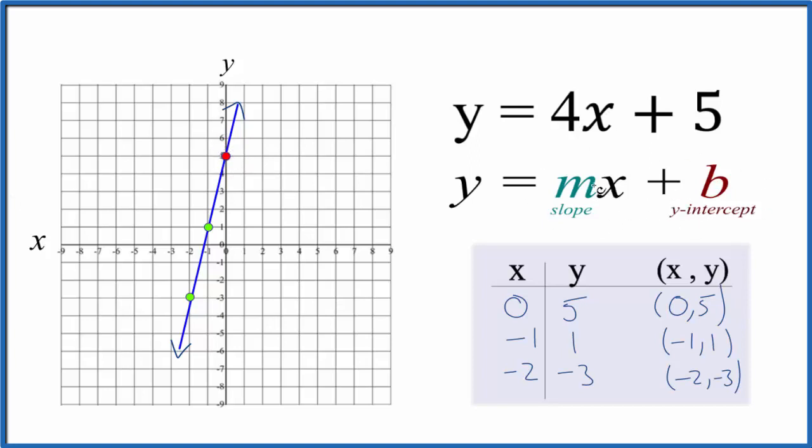And then we look at m. Why don't we consider this 4 over 1? So we have rise over run. 4 over 1 is the same as 4, so we really didn't change anything.